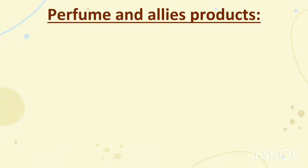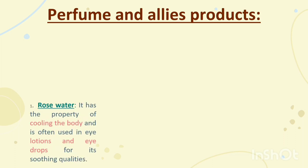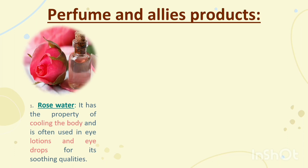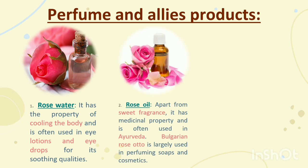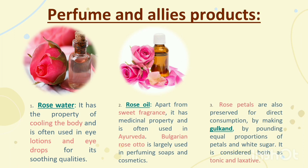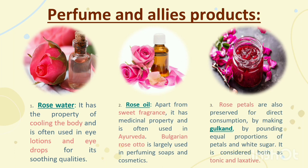Perfume and allied products. First: rose water. It has the property of cooling the body and is often used in eye lotions and eye drops for its soothing qualities. Second: rose oil. Apart from sweet fragrance, it has medicinal properties and is often used in Ayurveda. Bulgarian Rosa Otto is largely used in perfuming soaps and cosmetics. Third: rose petals are also preserved for direct consumption by making gulkand by pounding equal proportions of petals and white sugar. It is considered both as a tonic and laxative.